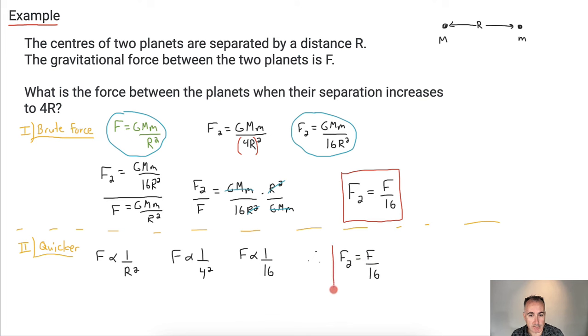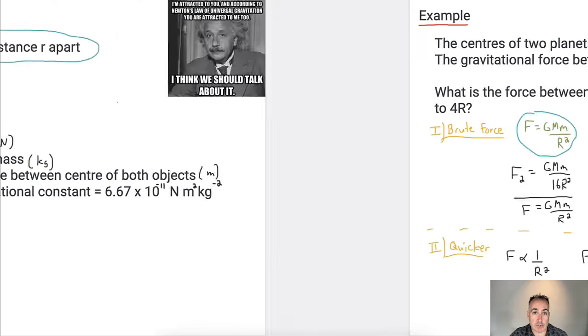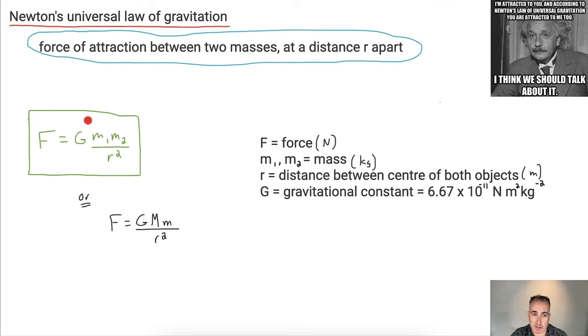So what have we learned here? We've learned about how to draw gravitational field lines, that they always go in towards the center of the gravitational object we're looking at. And we've also learned about Newton's universal law of gravitation that talks about the attraction force between two objects with mass that are a distance apart.